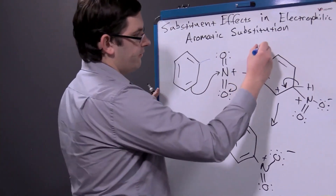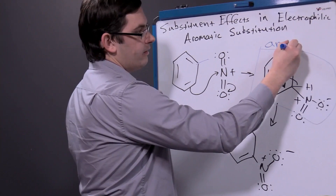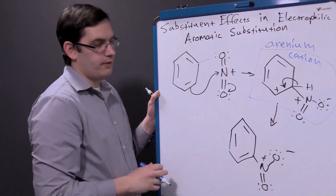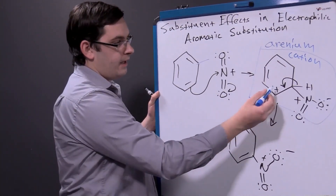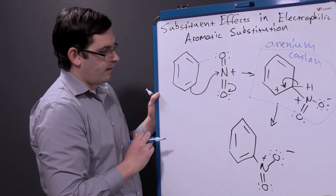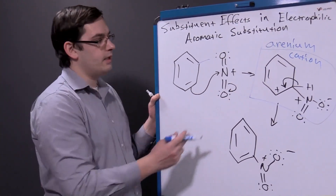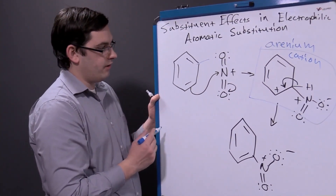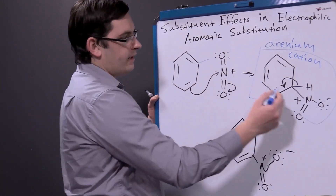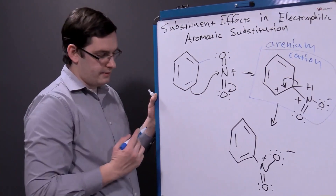This is due to the formation of our unstable arenium cation intermediate, where the loss of our aromaticity and that carbocation forming within our ring system destabilizes our structure overall. So anything that we can do in this first step will increase the rate of our reaction overall. If we increase the rate of our nucleophilic attack or if we increase the stability of our arenium cation, then we can increase the rate of our reaction.